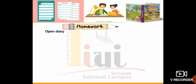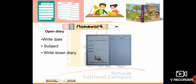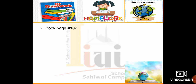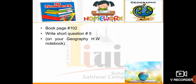Students, this is your homework. Open your diary. Write the date, subject — geography — and your homework. Now open book page number 102. Write short question number 5 in your geography homework notebook. The question is: what is meant by population density? The answer is: the number of people per square kilometer is called population density.